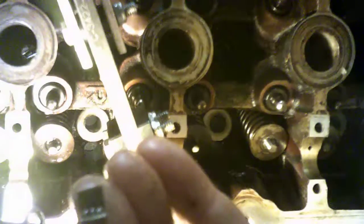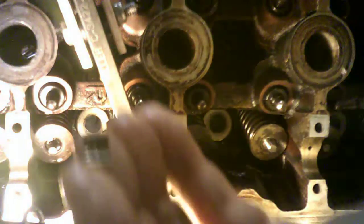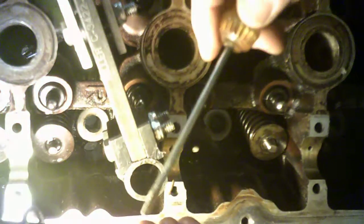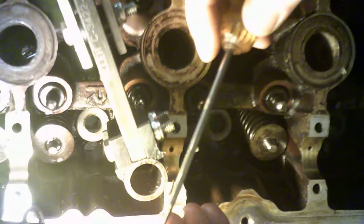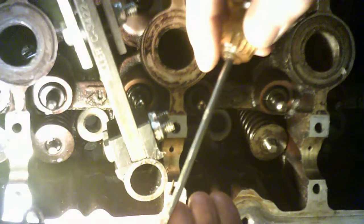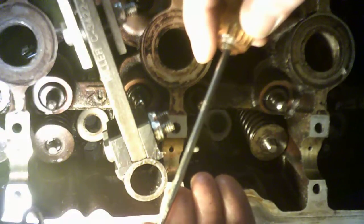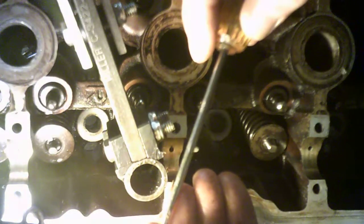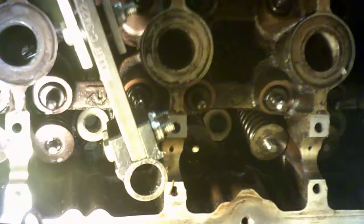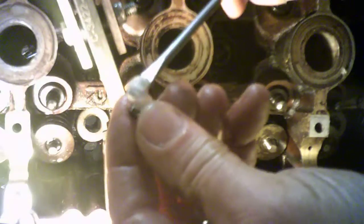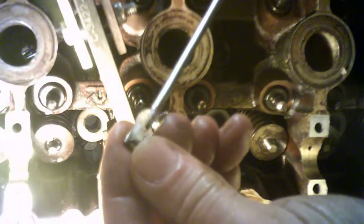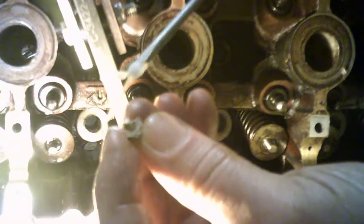If you look at the keepers, they are tapered on one side - the back end is wider than the front end. It kind of wedges into the retainer. So to get it back on the valve stem, I put a little Vaseline inside there and use it to stick it to the screwdriver.